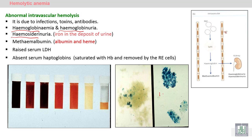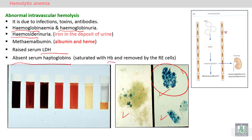We can detect the iron in the urine by a specific stain called the Prussian blue stain and observe the discoloration of the urine sample. There is also elevated serum LDH due to its release from inside the blood cells, and a decrease in serum haptoglobin because the haptoglobin becomes saturated by hemoglobin and is removed by macrophages of the reticuloendothelial system.